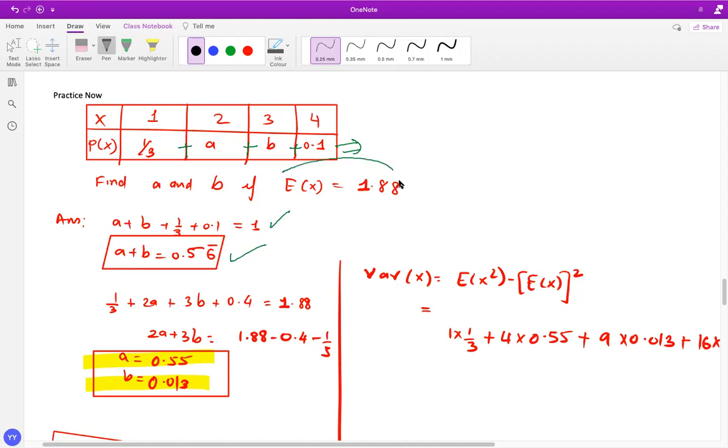The second is your expected value is 1.88. So in that case, what you're going to do is multiply X values with corresponding probability. So we get the second equation and equate to 1.88. So when you solve the values for A and B using simultaneous equation.